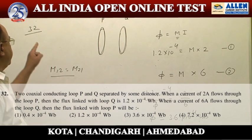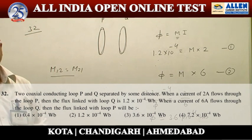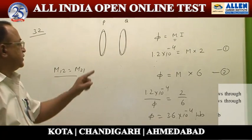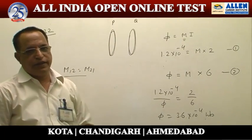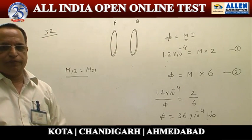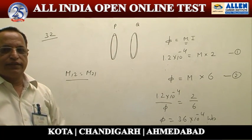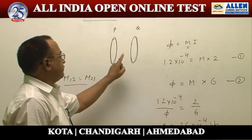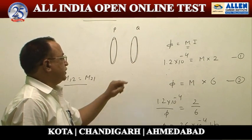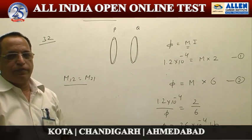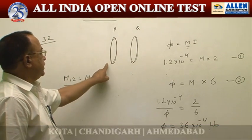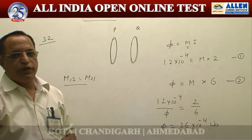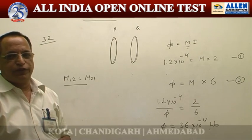Problem number 32 is related to the concept of mutual inductance. Two loops P and Q are placed at some separation. In the first case, they are giving us current in P and flux in Q. Current given in P is 2 ampere and flux in Q is given as 1.2 × 10⁻⁴ Wb.